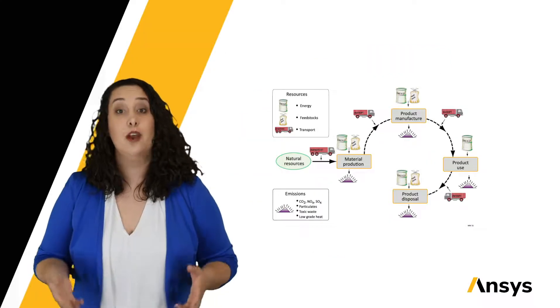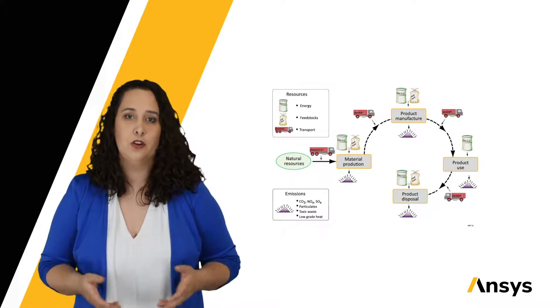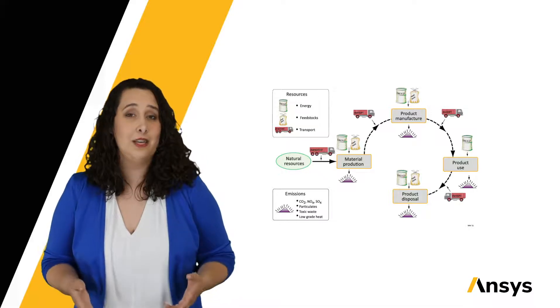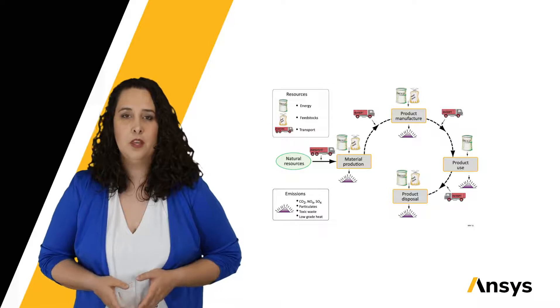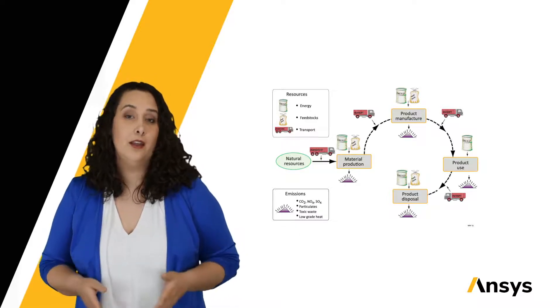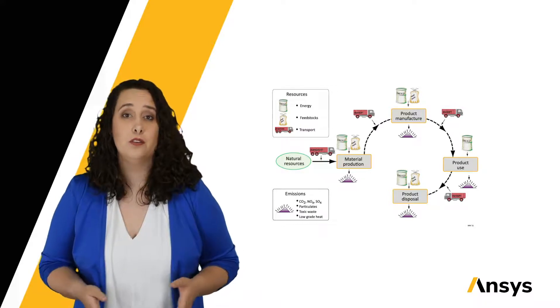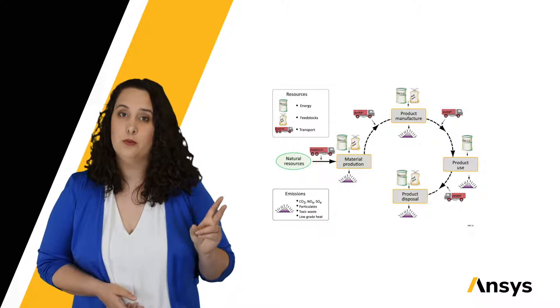So, we have our lifecycle, and we know where and what our inputs and outputs are in terms of environmental impact. How do we reduce or eliminate them, especially for material processing? Let's actually start at the end of our lifecycle. Maybe you've heard of something called the three R's as a way to minimize environmental impact: Reduce, reuse, and recycle.